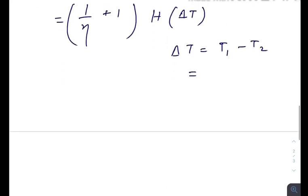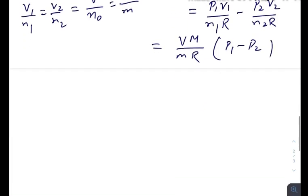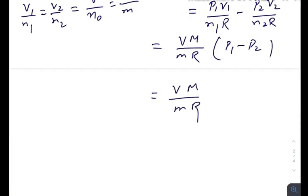ΔT is the temperature difference between the two regions, so ΔT = P1·V1/(n1·R) minus P2·V2/(n2·R). Considering helium as an ideal gas, V1/n1 equals V2/n2, which equals total volume divided by total number of moles, which is total mass divided by molar mass. So it becomes V·M/(m·R) times (P1 - P2), or V·M/(m·R)·ΔP.